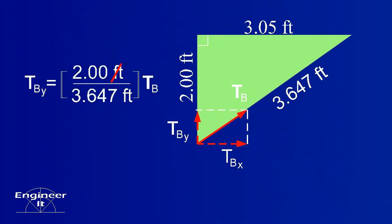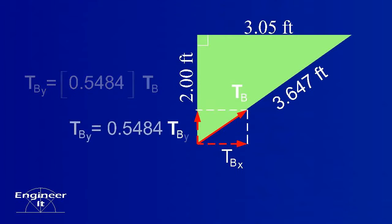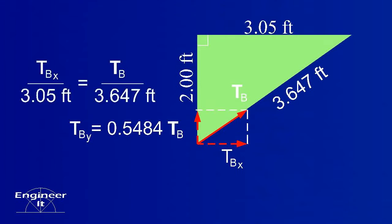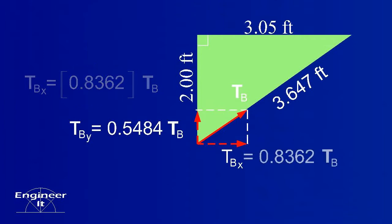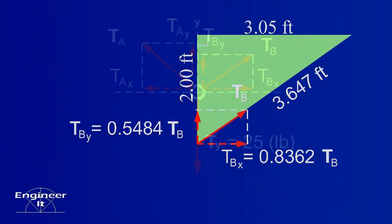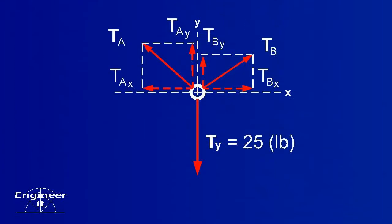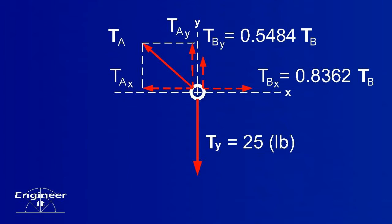When solving, notice that the feet units cancel. You're left with a scalar value. Do the same for TBx. Now we have TBx and TBy in terms of the tension TB.